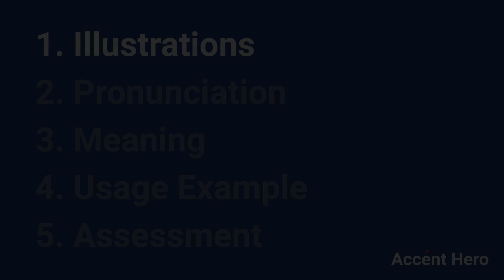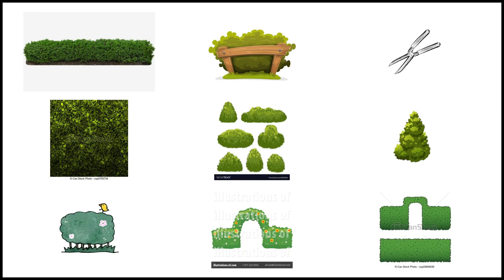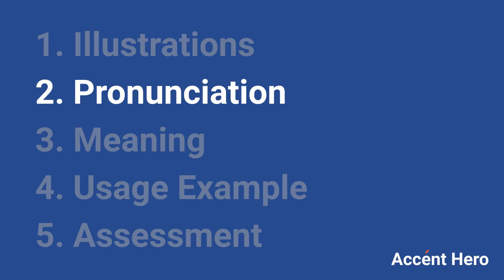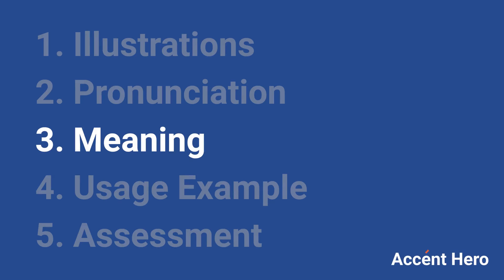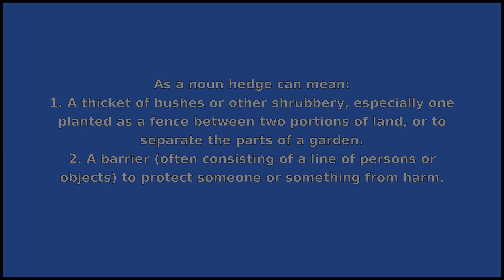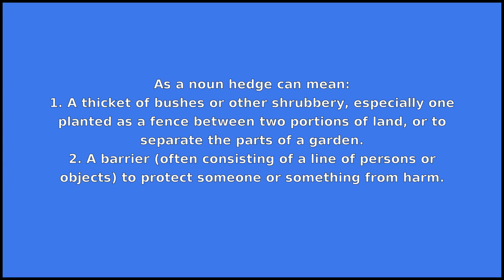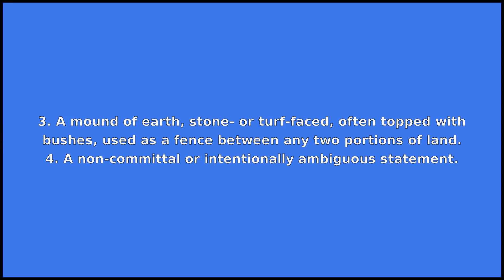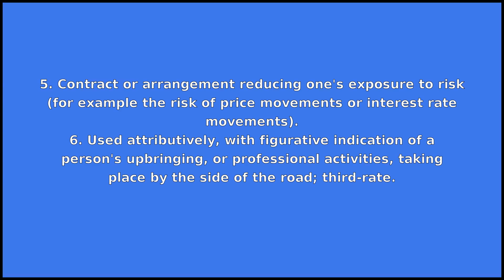Hedge can be a noun, a verb, or a name. As a noun, hedge can mean: one, a thicket of bushes or other shrubbery, especially one planted as a fence between two portions of land or to separate the parts of a garden; two, a barrier often consisting of a line of persons or objects to protect someone or something from harm; three, an amount of earth, stone, or turf faced and often topped with bushes, used as a fence between any two portions of land; four, a non-committal or intentionally ambiguous statement; five, a contract or arrangement reducing one's exposure to risk, for example the risk of price movements or interest rate movements; six, used attributively with figurative indication of a person's upbringing or professional activities taking place by the side of the road — third rate.